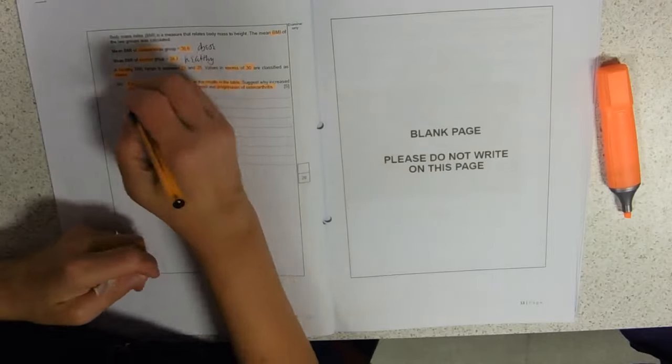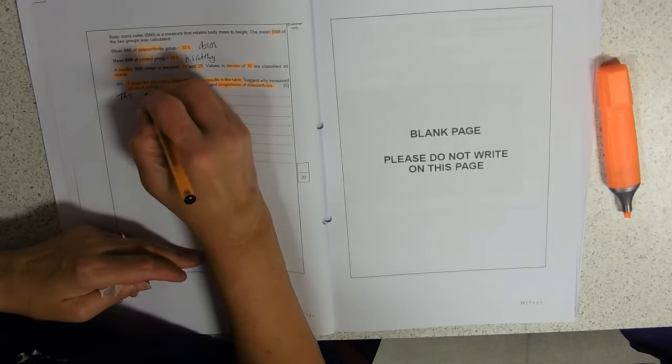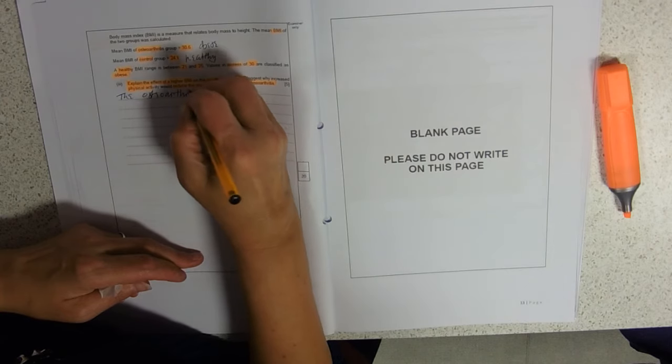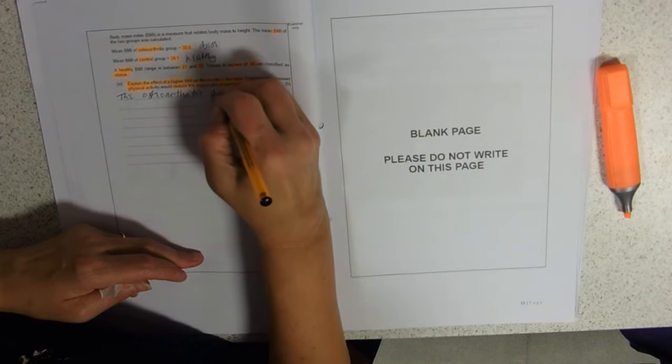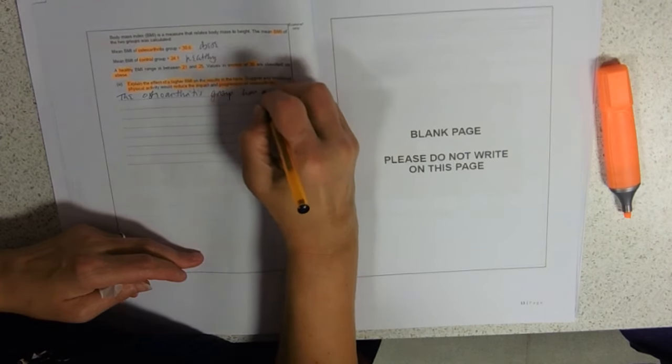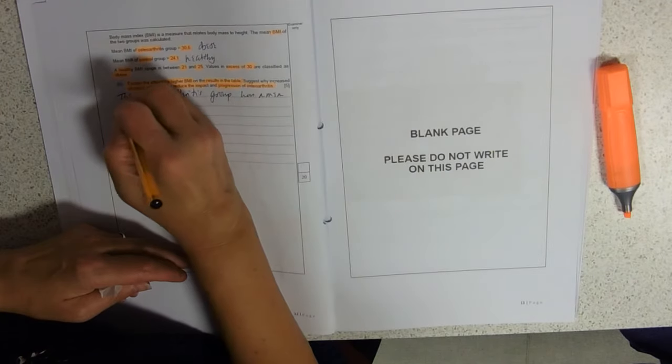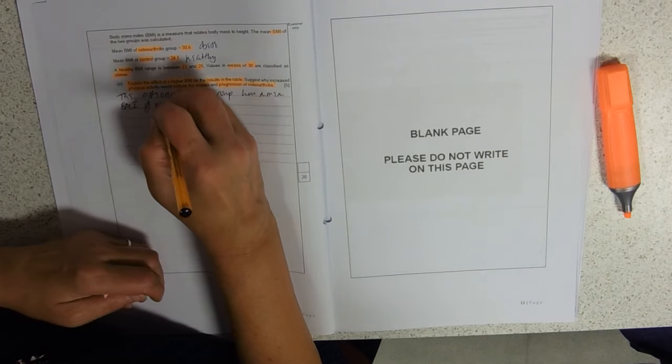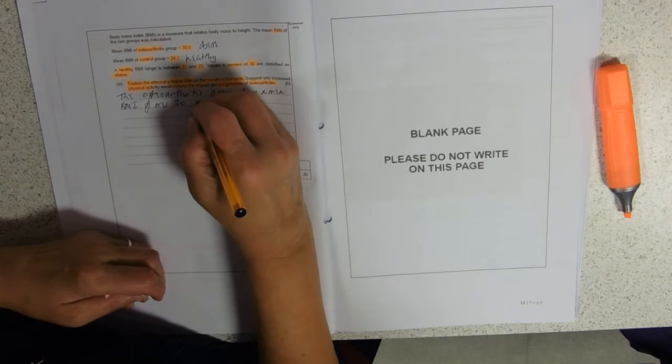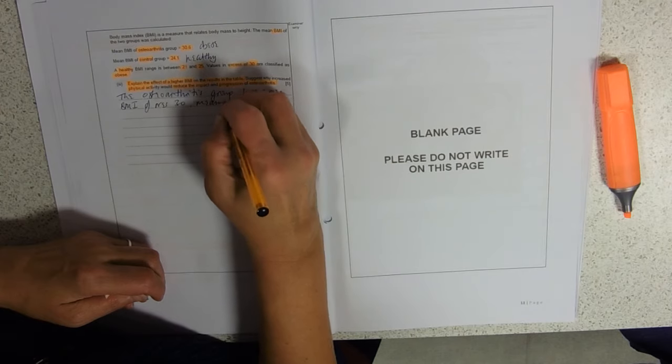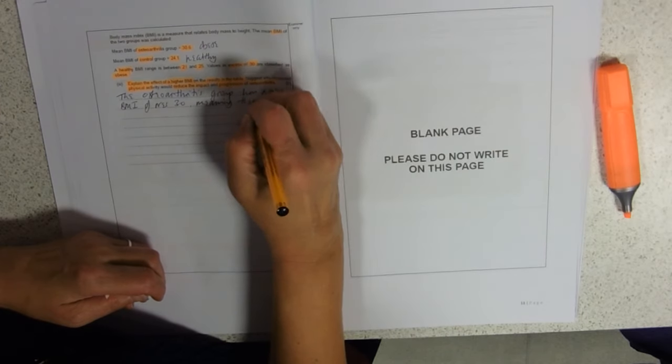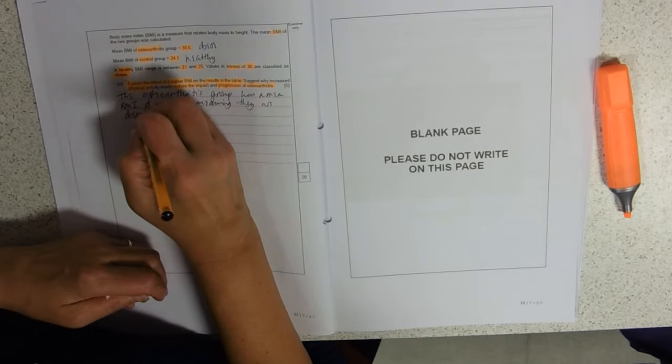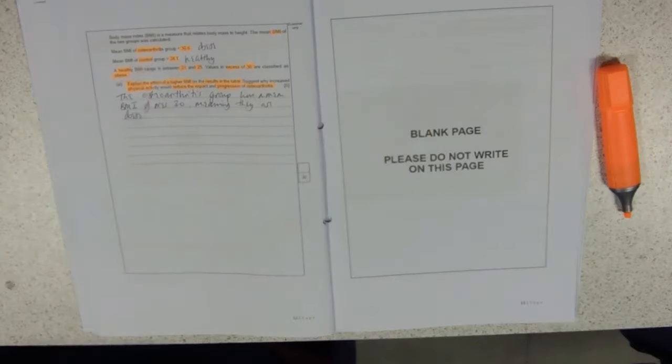So the osteoarthritis group has a mean BMI of over 30, meaning they are obese, in addition to all their other problems.